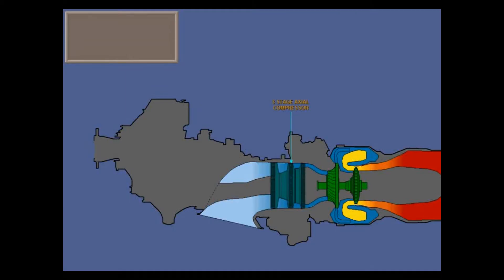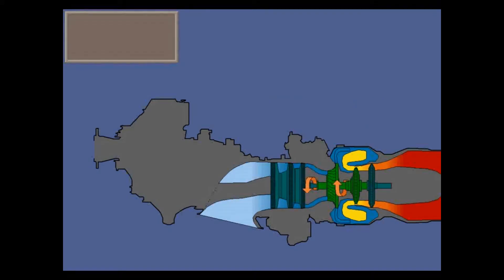But we need more power. So, add a second three-stage axial compressor to compress more inlet air, directly linked by a second shaft to its own turbine. This is the low-stage compressor and turbine, or low-pressure spool. The low-stage shaft is inside the high-stage shaft, but there is no direct link between the high and low stages. The shafts rotate at different speeds, and to minimize any gyroscopic effect, in opposite directions.